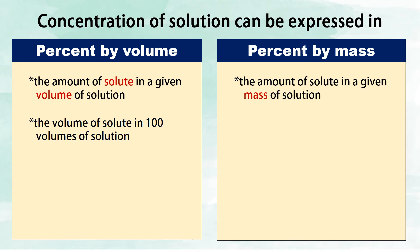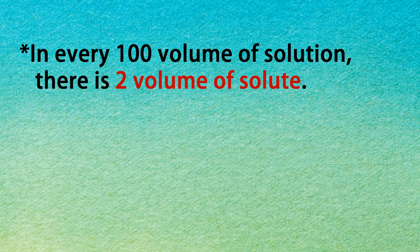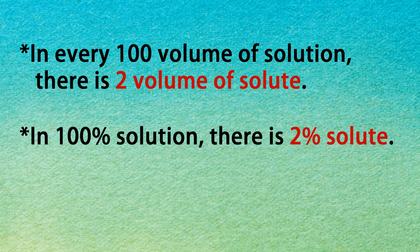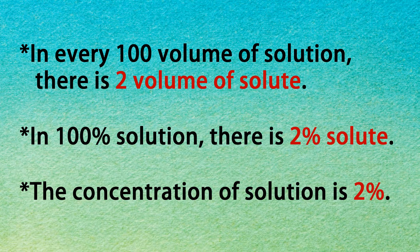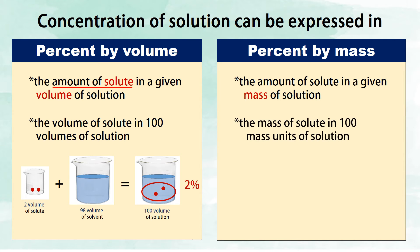For example, 2 volumes of solute plus 98 volumes of solvent equals 100 volumes of solution. The amount of solute here is 2 volumes, so the concentration of solution is 2%. Thus, in every 100 volumes of solution there are 2 volumes of solute, or in a 100% solution there is 2% solute. Therefore, the concentration of solution is 2%.